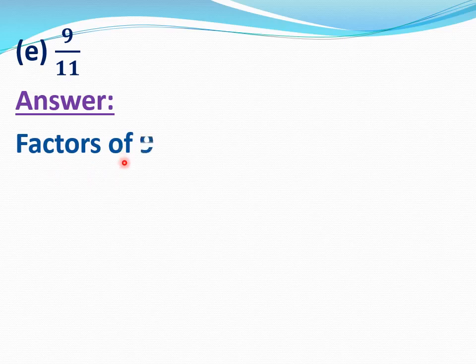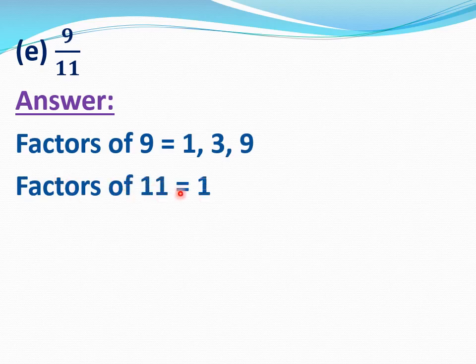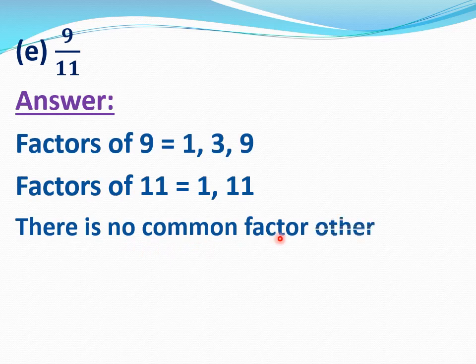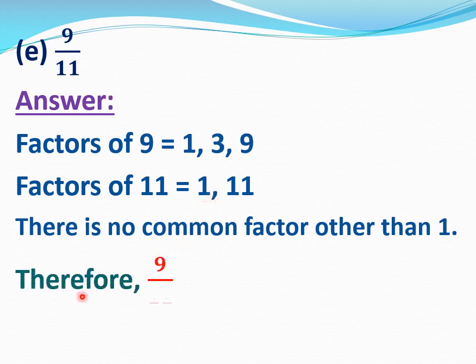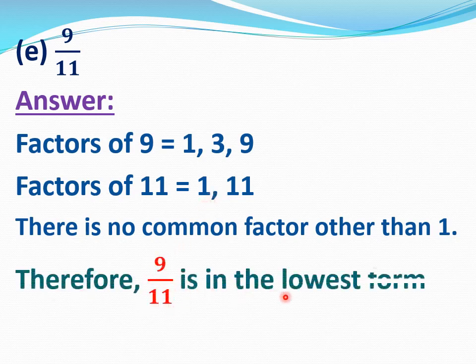Now E part, 9 by 11. We have to check whether 9 by 11 is in the lowest form or not. Find the factors of 9 and 11. Factors of 9 equal 1, 3, and 9. Factors of 11 equal 1 and 11. Find common factors of 9 and 11. There is no common factor other than 1. Therefore 9 by 11 is in the lowest form; we cannot simplify it further.